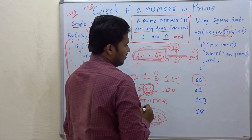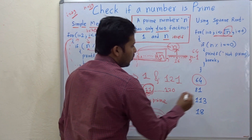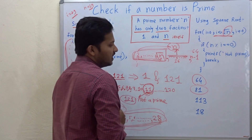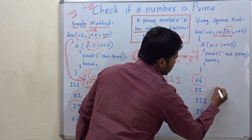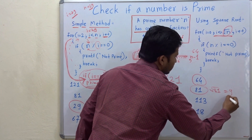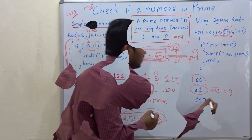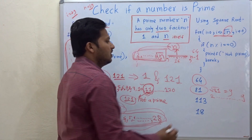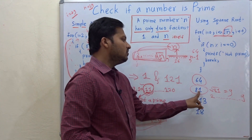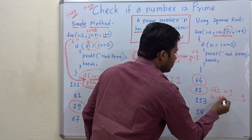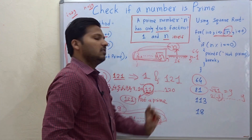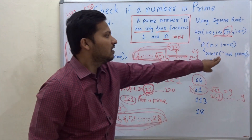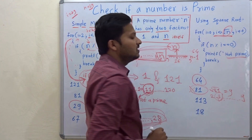Now let's check 81. The square root of 81 is 9. So we check from 2 to 9. Whether 2 divides 81 — no. Whether 3 divides 81 — yes, 3 divides 81. So 81 is not a prime number.